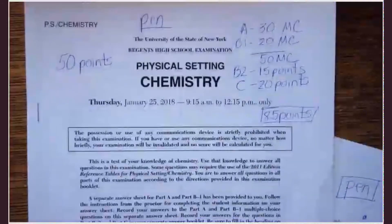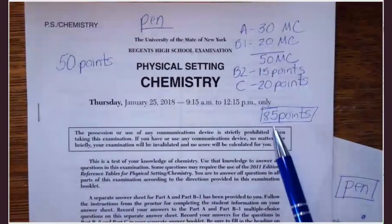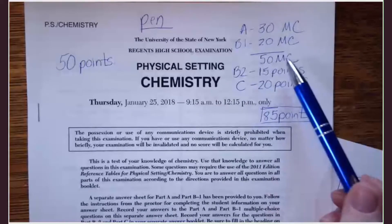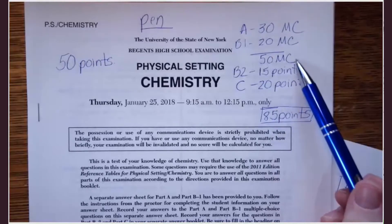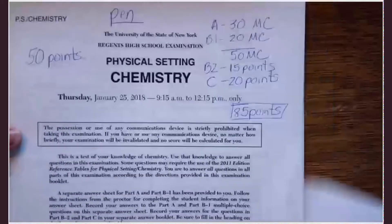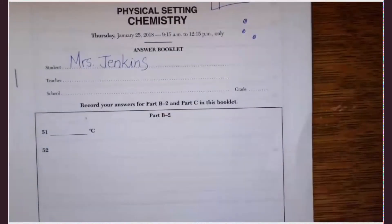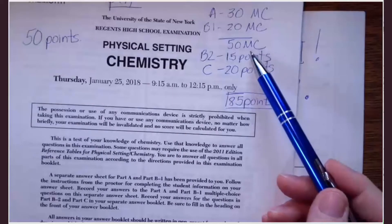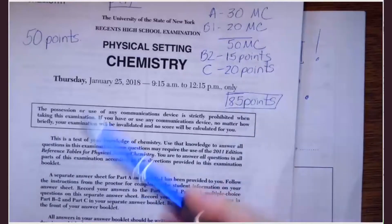Again, must write in what? Pen. Can't be graded if it's in pencil. It's going to be out of 85 points total. 50 of those points come exclusively from multiple choice questions. The remaining 35 points come from written questions. Those written questions are going to be answered in this answer booklet. The 50 multiple choice questions are going to be answered on a bubble sheet. So this is the general setup of the exam.